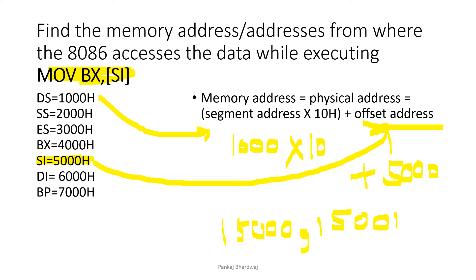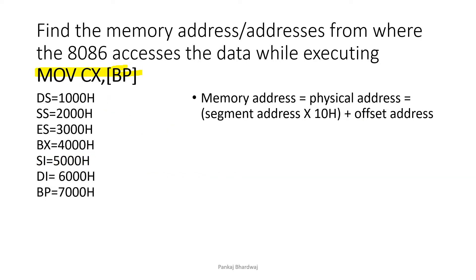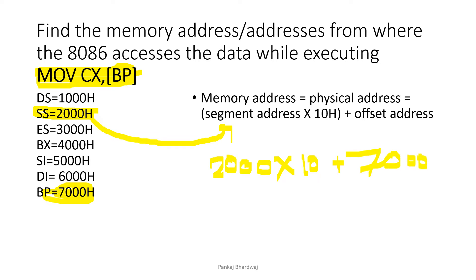Next is MOV CX,[BP]. BP is the base pointer, which is indexed by the stack segment register. So to calculate the segment address, SS is used. Physical address = SS×10H + BP = 2000×10H + 7000H = 20000H + 7000H = 27000H. Since CX is a 16-bit register, two memory locations are required: 27000H and 27001H.